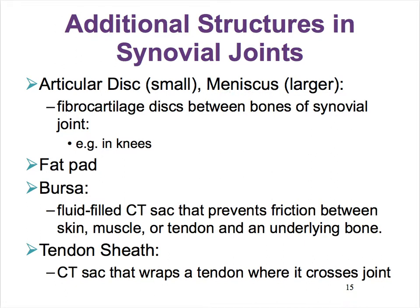Sometimes they're small and we call them articular discs. There might be fatty pads that help cushion. And there are two structures filled with synovial fluid: one is called a bursa—which literally means a little purse—a sac-like structure filled with synovial fluid.